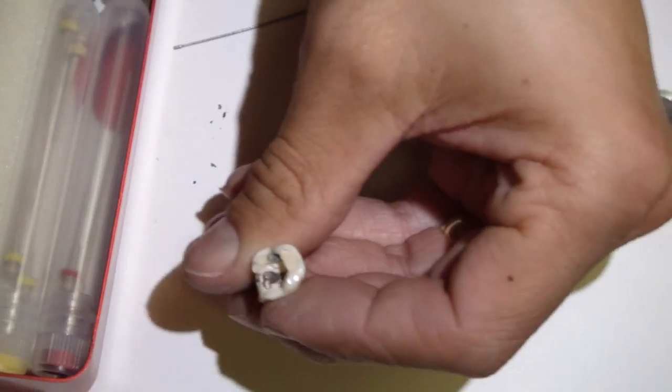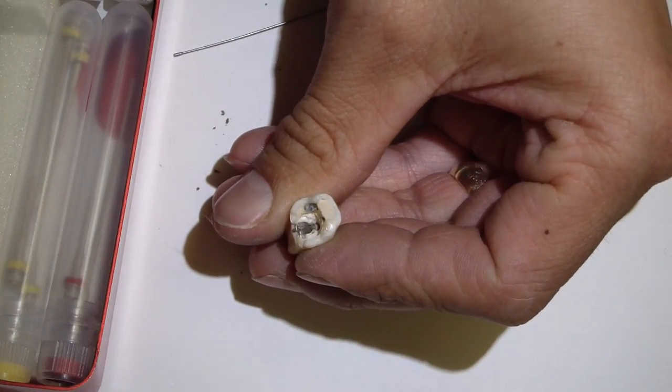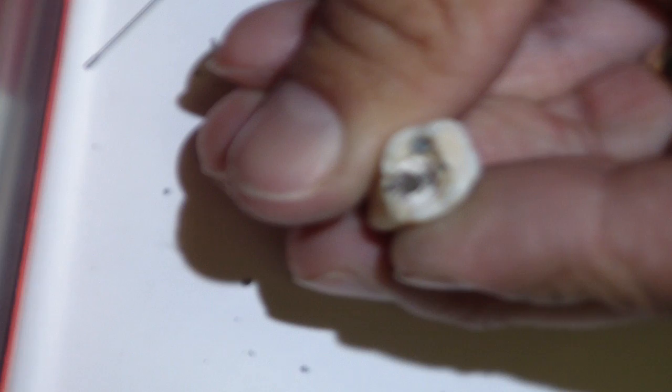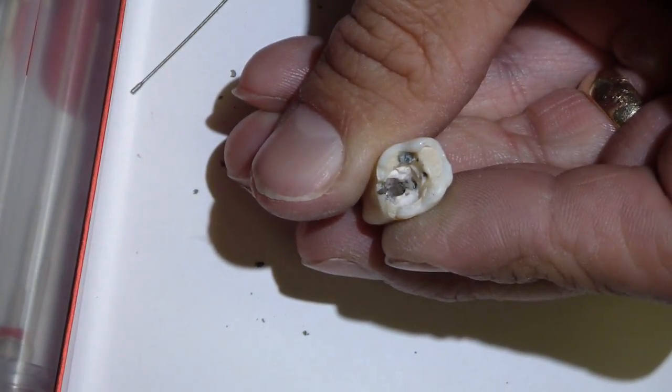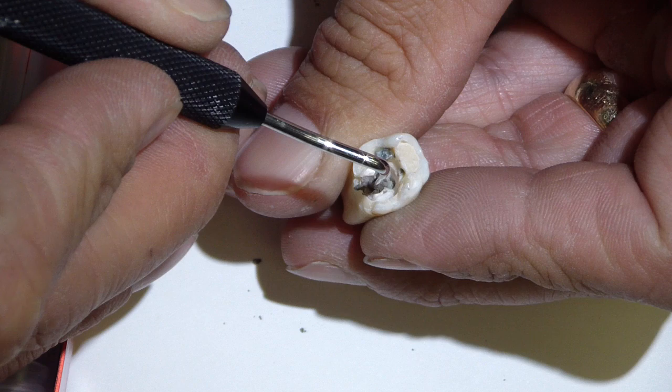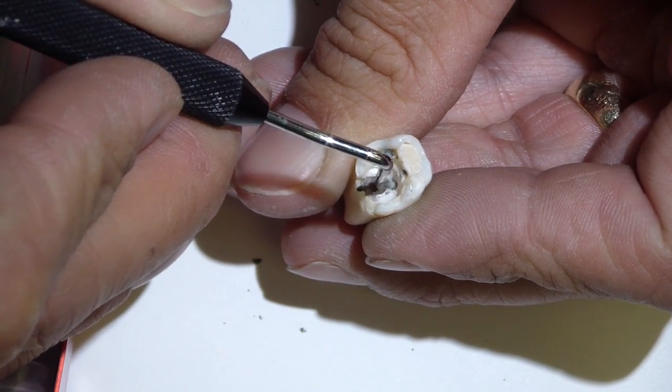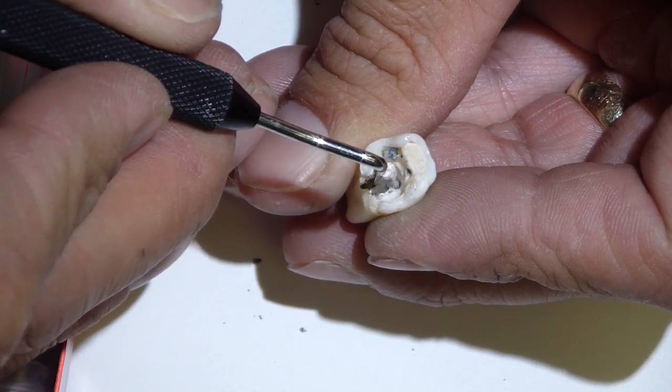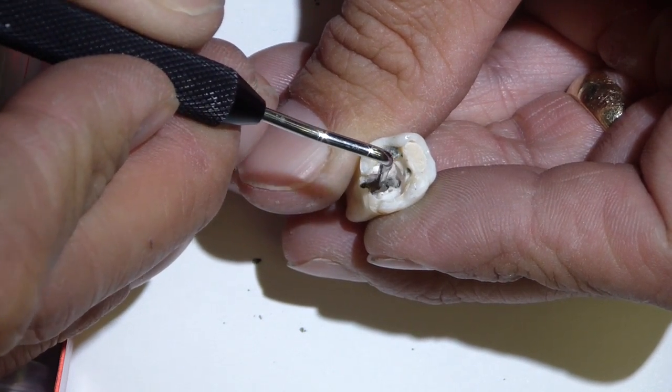We take our condensing instrument. There we go. And then condense apically. You may need to fill this a few times. You can use ultrasonics if you have, to ensure that you have a dense fill.